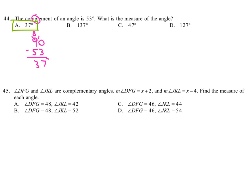If the measure of one of the angles is X plus 2 and the measure of the other angle is described as X minus 4, find the measure of each angle.